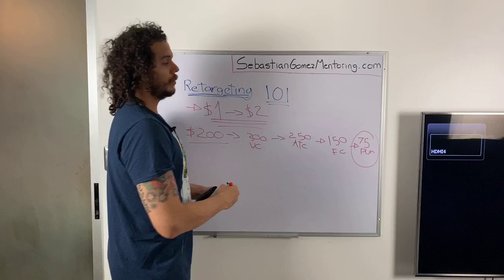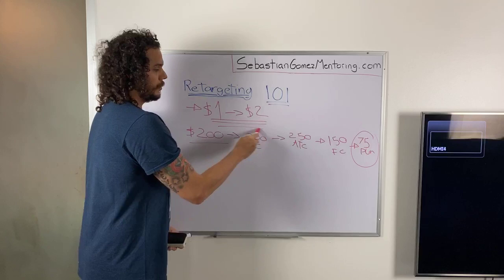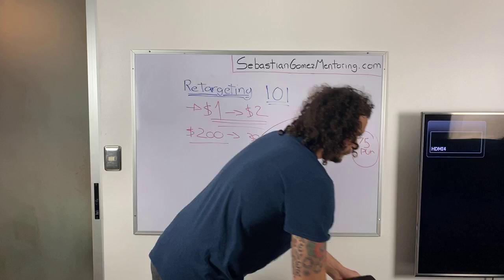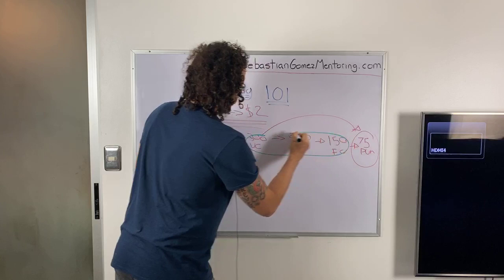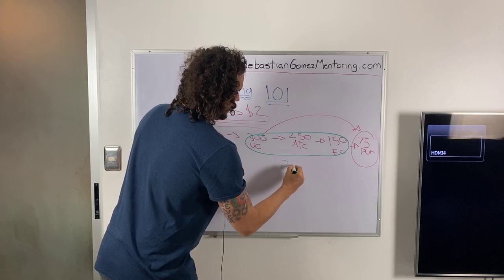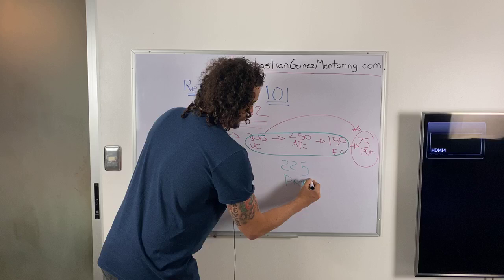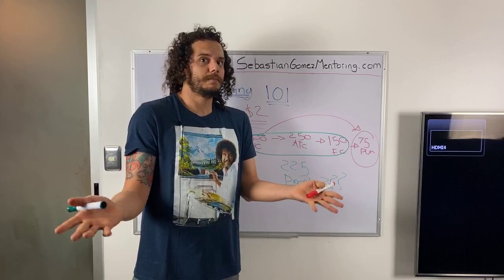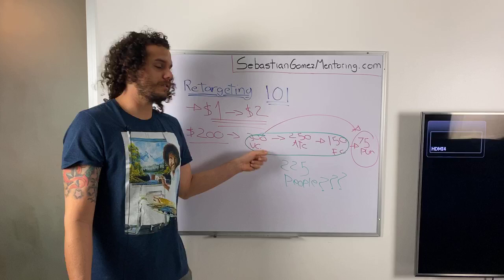From $200, starting from 300 people that actually landed to your site, you were able to close 75 purchases. But what happened to all the other people? What happened to the 225 people that you sent to your site? You're not going to just leave them? You only got 75 purchases but you started with 300 — this is really important.